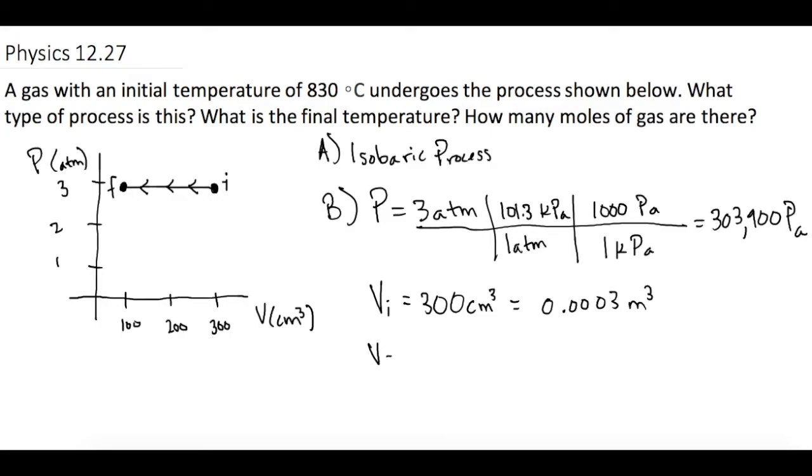And the final volume is 100 centimeters cubed. Move the decimal place over 6 again, 1, 2, 3, so 0.0001 meters cubed. All right, so now we're straight with everything.